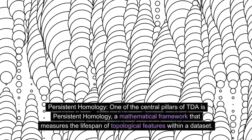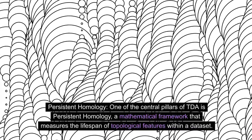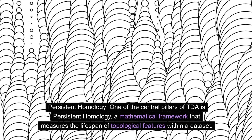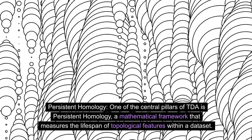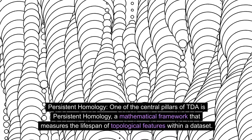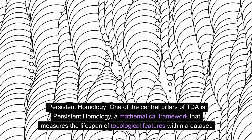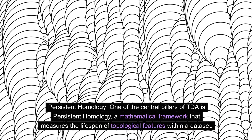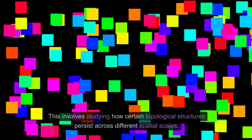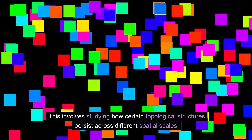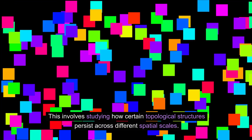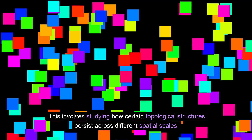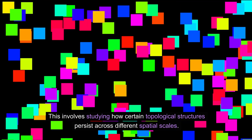Persistent homology. One of the central pillars of TDA is persistent homology, a mathematical framework that measures the lifespan of topological features within a data set. This involves studying how certain topological structures persist across different spatial scales.